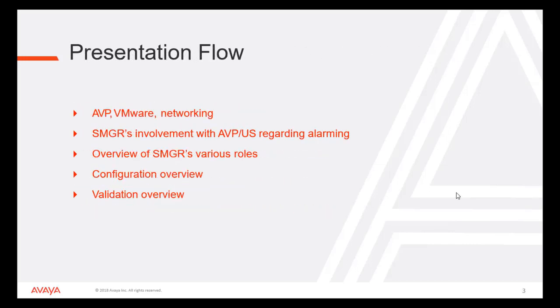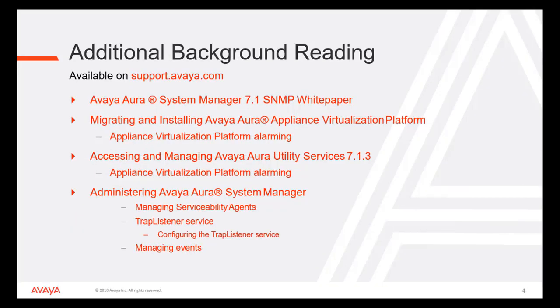The Presentation Flow will cover AVP VMware Networking, System Manager's Involvement with AVP Utility Server regarding Alarming, Overview of System Manager's Various Roles, Configuration Overview and Validation Overview. Additional background reading will be available on support.avaya.com — refer to the Avaya Aura System Manager 7.1 SNMP White Paper, migrating and installing Avaya Aura Appliance Virtualization Platform for Alarming, accessing and managing Avaya Aura Utility Server 7.1.3 for AVP Alarming, and Administering Avaya Aura System Manager — specifically managing Serviceability Agents and the Trap Listener Service for configuring the Trap Listener Service and managing events.